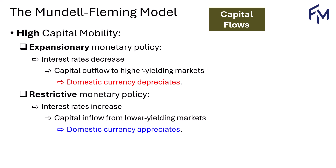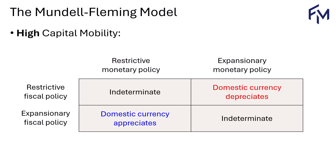When we combine the different potential policies, we get this table. If both are expansionary, expansionary fiscal policy leads to higher interest rates while expansionary monetary policy drives rates down. Since the impacts on interest rates are opposite, the results cancel out, leaving the exchange rate outcome indeterminate or inconclusive.